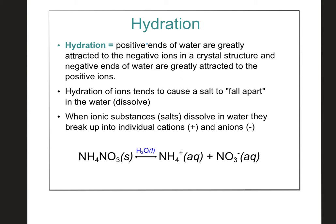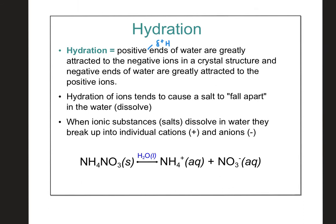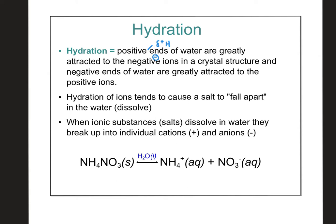Hydration is where the partial positive hydrogens of water are greatly attracted to negatively charged ions in an ionic crystal structure, and the partial negative oxygens are greatly attracted to the positive ions from the ionic solid. Hydration of ions causes the salt to fall apart. For Na⁺ paired with Cl⁻, the compound splits so positive Na⁺ goes near the partial negative oxygen, and negative Cl⁻ goes near the partial positive hydrogen. When ionic substances dissolve in water, they break into those positive and negative ions.